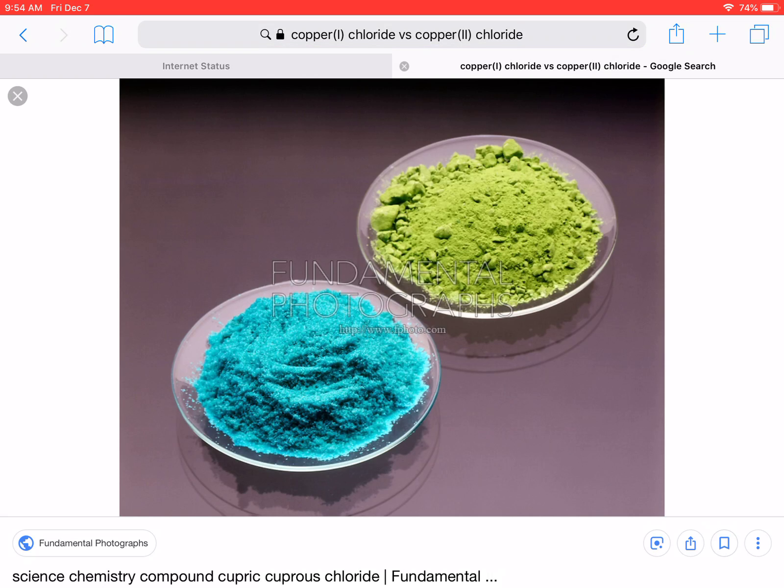The one up in the top right, that one's copper 1 chloride, and it means that copper lost 1 electron and bonded to chlorine. So even though you still have copper bonding to chlorine, you can see that these chemicals are totally different, so you can't just call it copper chloride. So we indicate that with Roman numerals in parentheses.